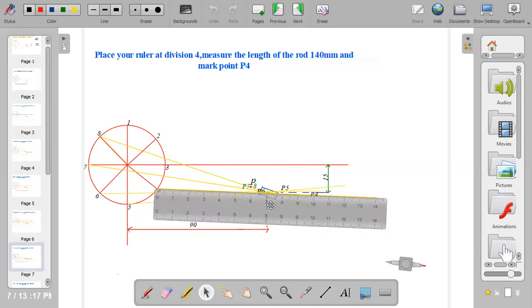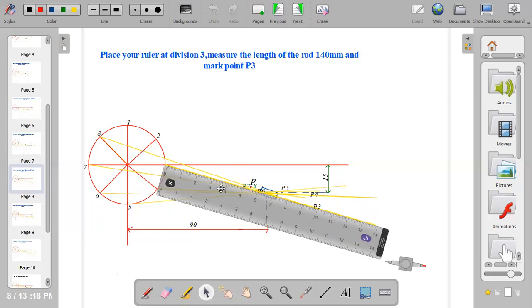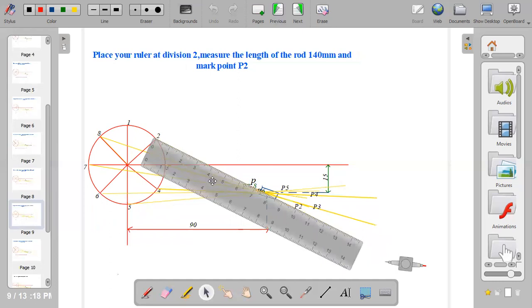At division 4, place your ruler to pass through the pivot. All the points are going through the pivot, so measure 140 and dot point 100. Then you go to division 3. At division 3, place your ruler this way, draw your rod and make sure the rod passes through the pivot point. At point 100 you dot P3.